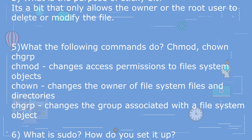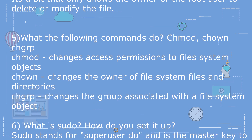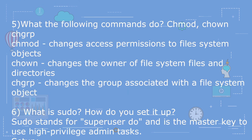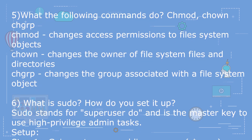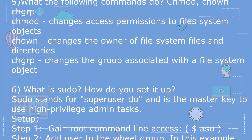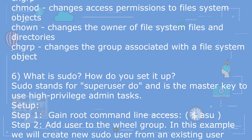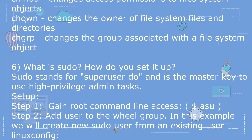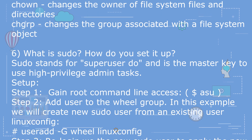Question 6: What do the following commands do — chmod, chown, chgrp? chmod changes access permissions to file system objects. chown changes the owner of file system files and directories. chgrp changes the group associated with a file system object.